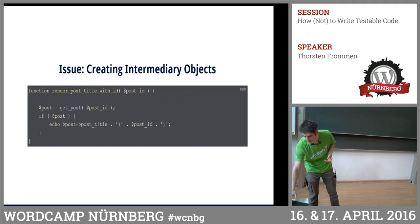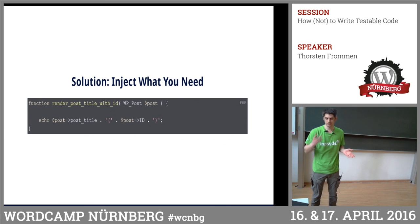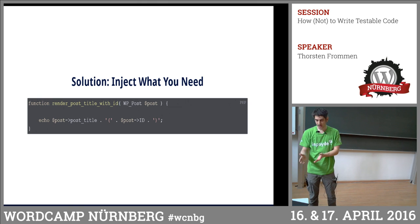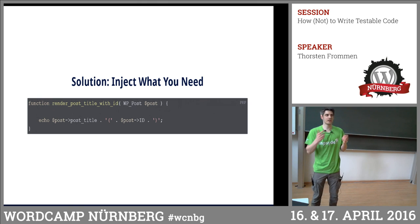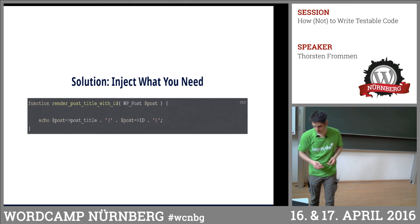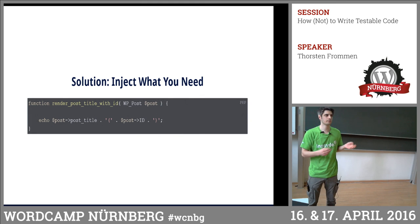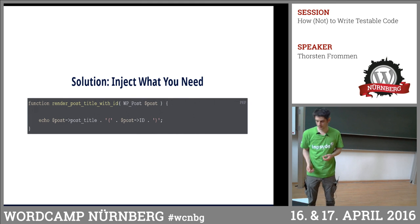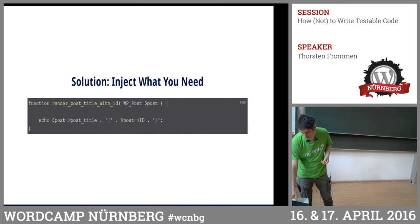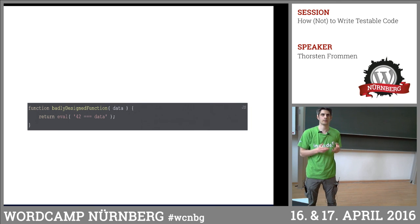Another issue is creating intermediary objects: I'm passing in an ID, but what I actually want is the post object. So why not get the post object outside and pass it in? Then I can access the title, content, and ID. But then the method is called render — not 'fetch something and then maybe render.' Name your functions like you want them to do, and make them do what you name them.